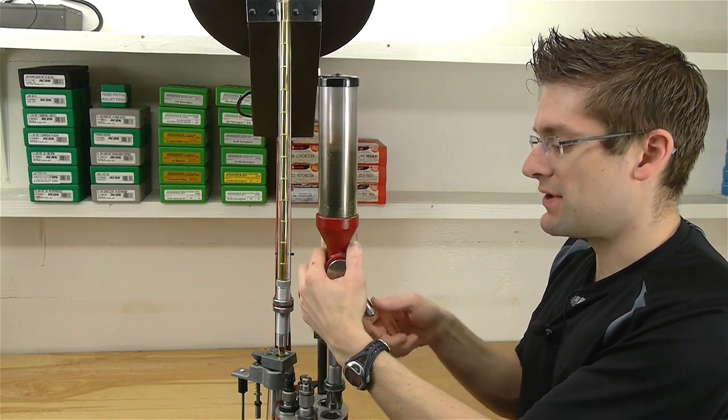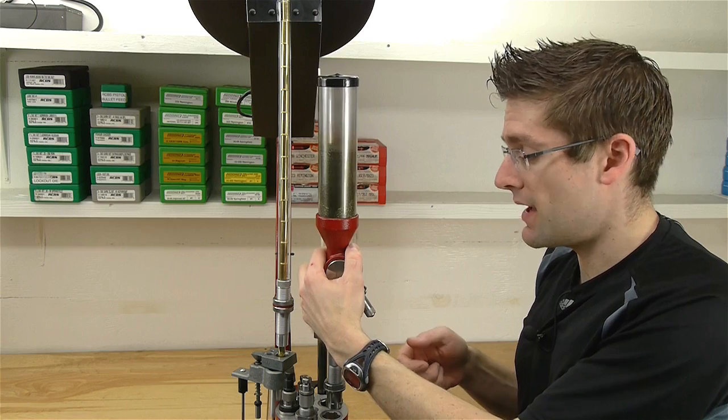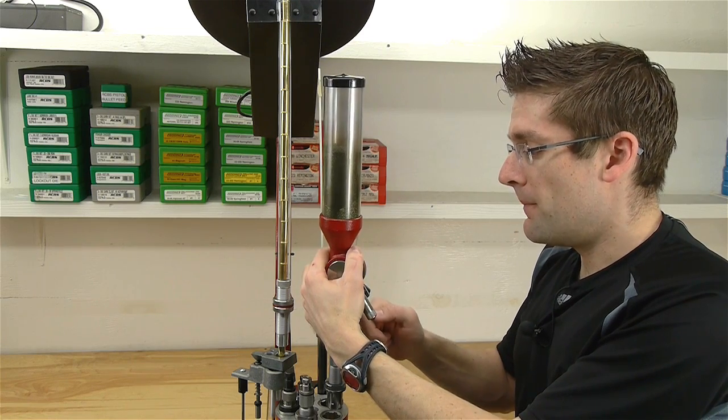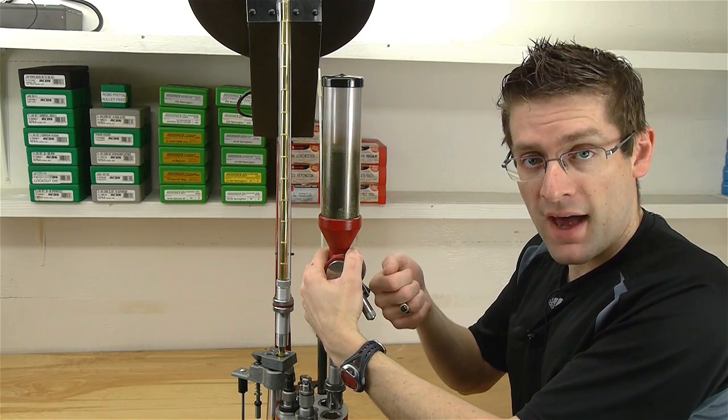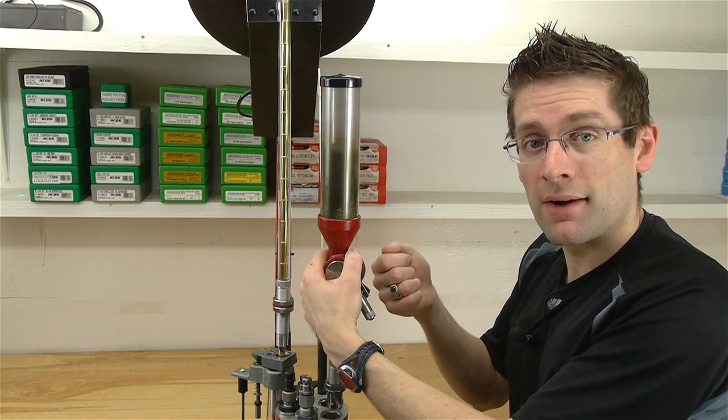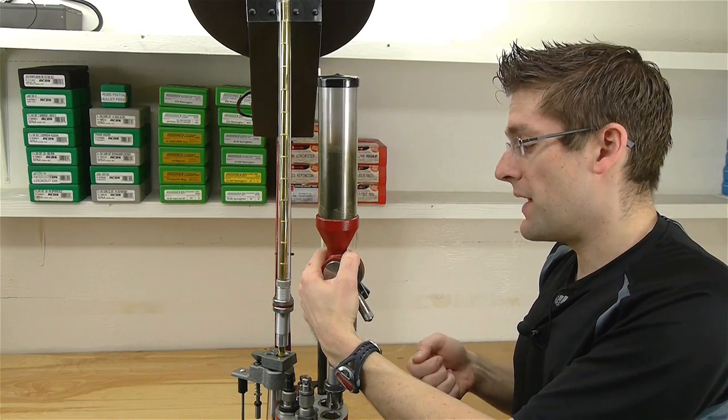And that allows us actually to pull the metering insert out. And if you rotate the drum into the halfway position, you can actually do that carefully without spilling powder.